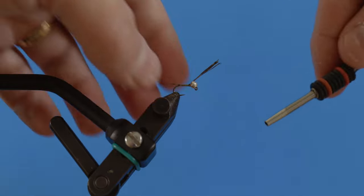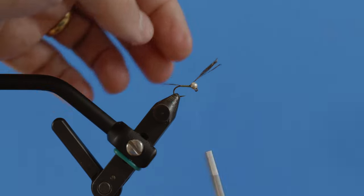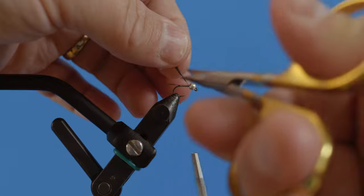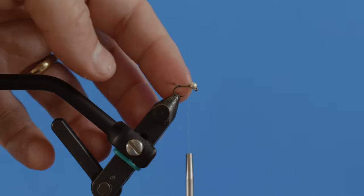I'm going to do one wrap underneath the tailing fibers just to kind of get them to stand up a little bit. Move my thread back forward, trim off the excess. So we've got our tail coming off right there where the barb of the hook would be.